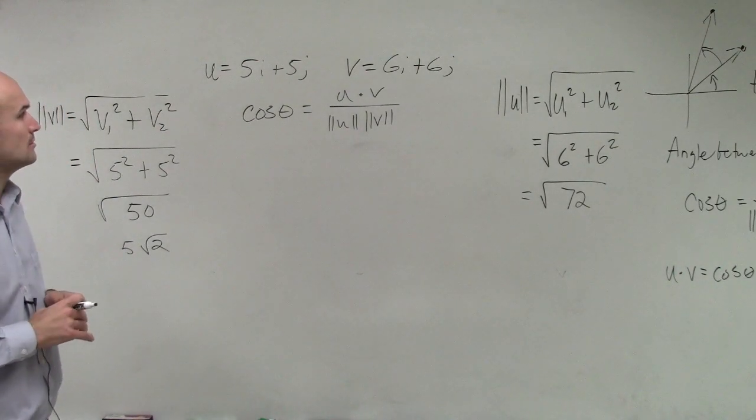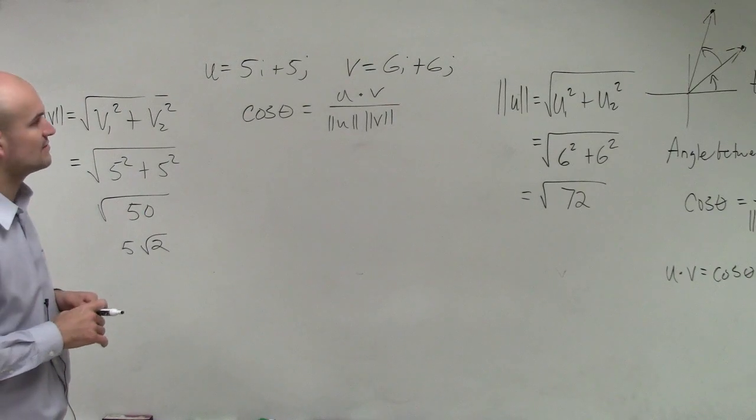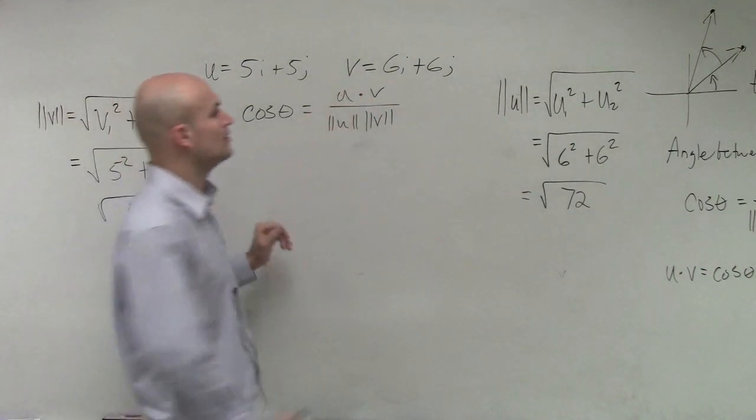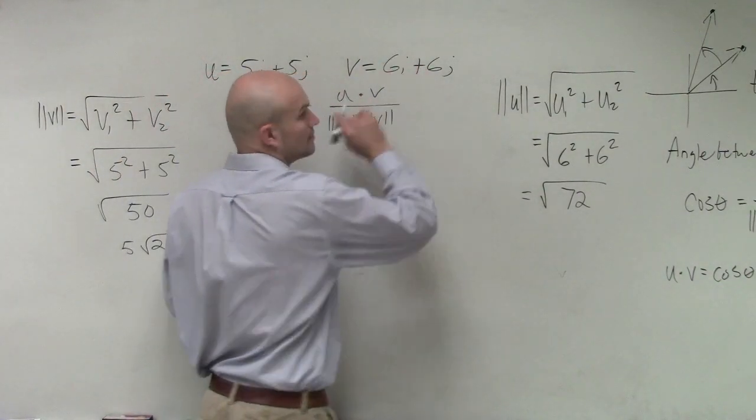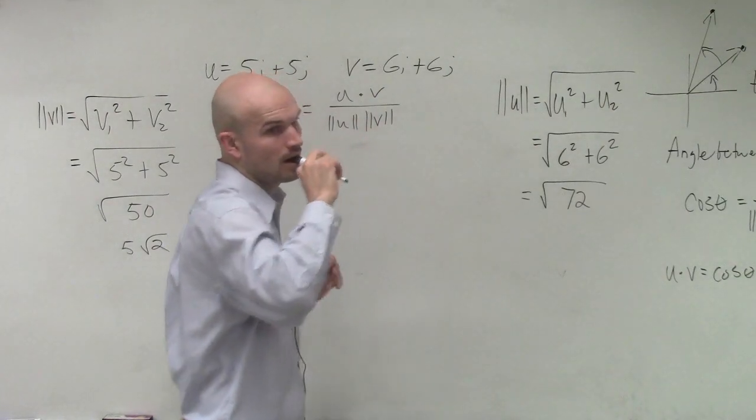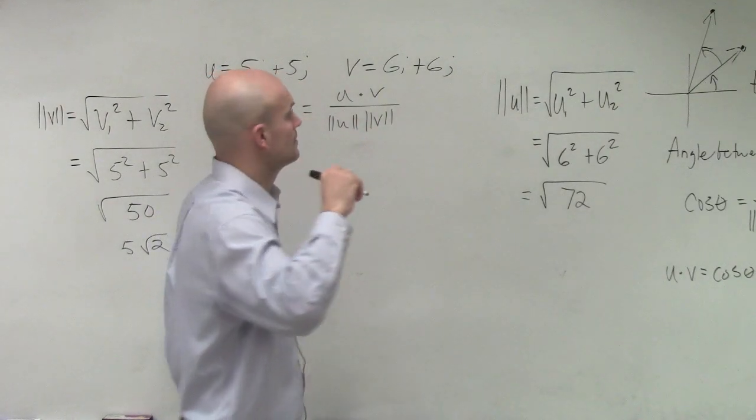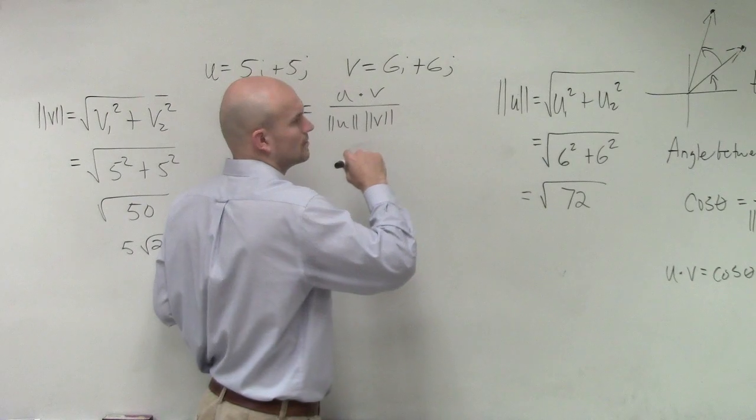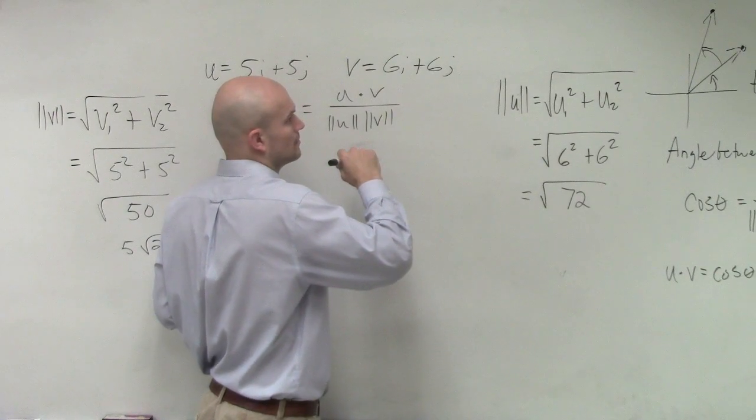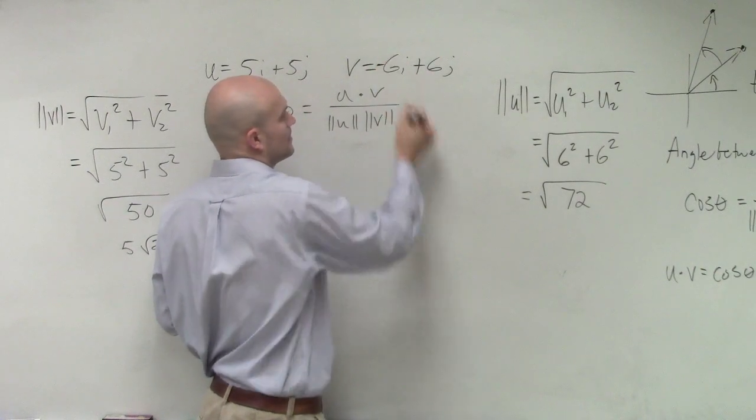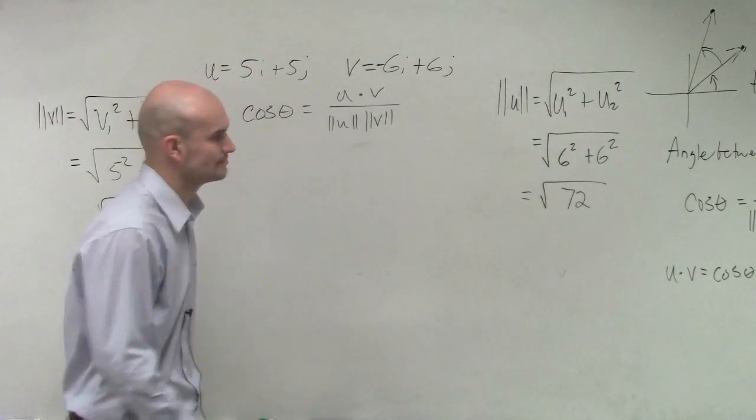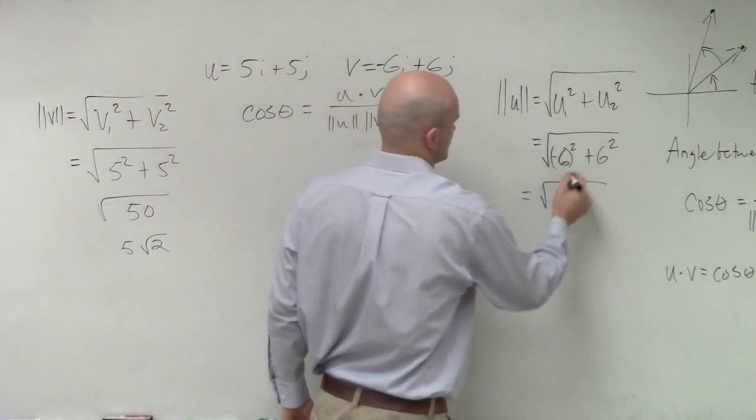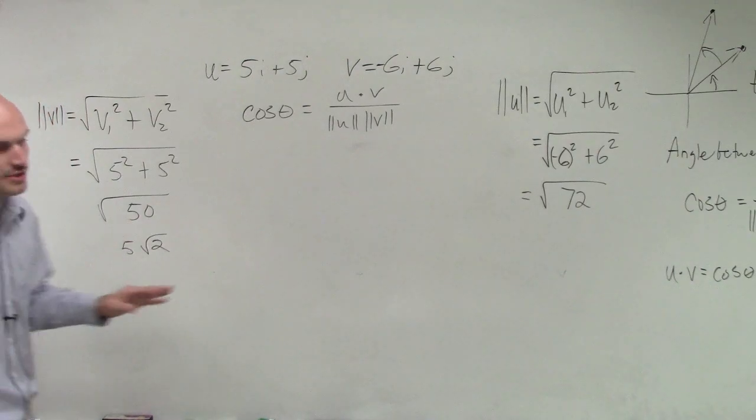For v, it's negative 6i. V is negative 6i. Here? Yeah. Oh, really? No, it's not. Yeah, it's negative 6i. I mean, i was like 1. When you square it, it's going to be positive. It's negative 6i. This would still be the same, though. Yeah. Thank you.